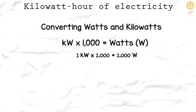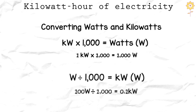Simply multiplying kilowatts by 1,000 will convert them into watts. For example, 1 kilowatt multiplied by 1,000 equals 1,000 watts. By dividing by 1,000, you can also convert watts to kilowatts — for example, 100 watts divided by 1,000 equals 0.1 kilowatts.